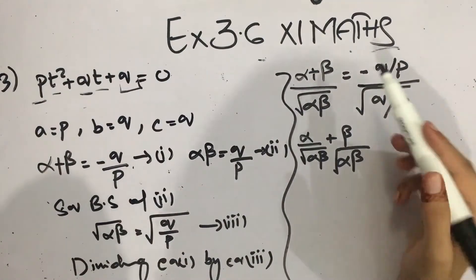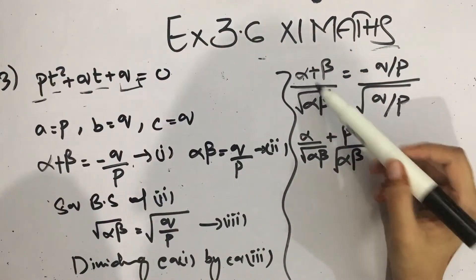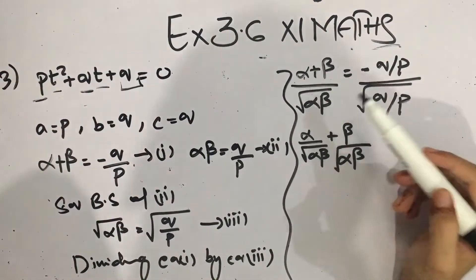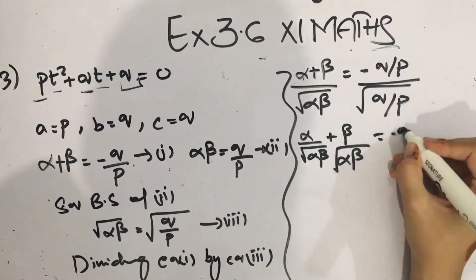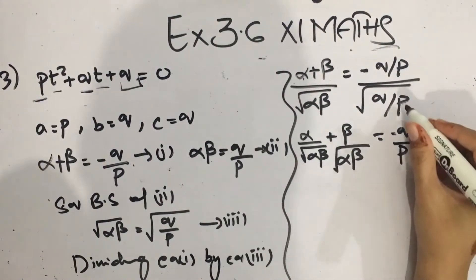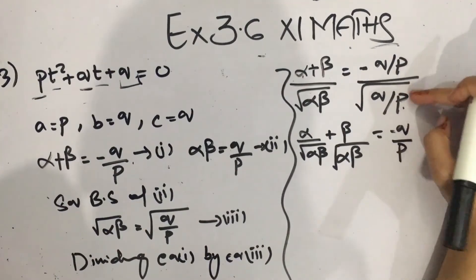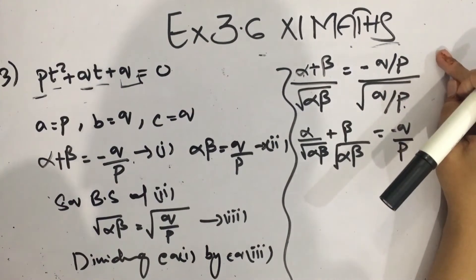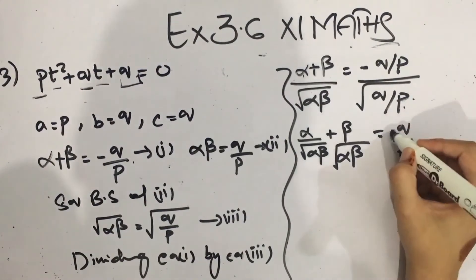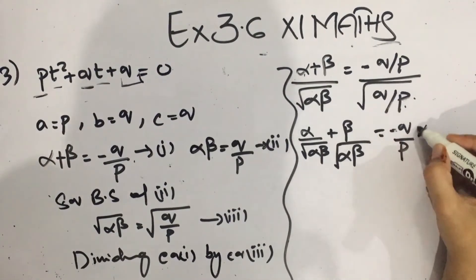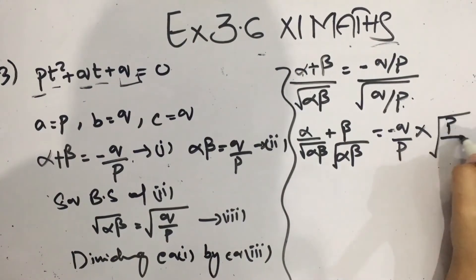We can see that √(αβ) is also equal to √α times √β. So I rewrite it differently. On the right side, dividing by √(q/p) is the same as multiplying by the reciprocal, which gives us p/q. We then take this reciprocal: the right side becomes minus q/p multiplied by p/q.